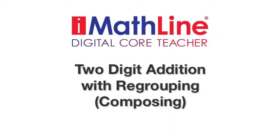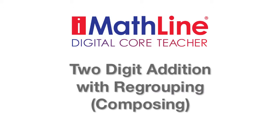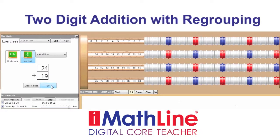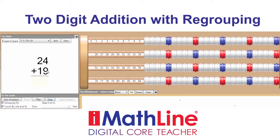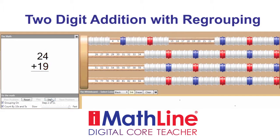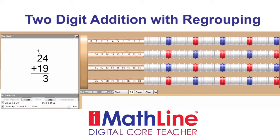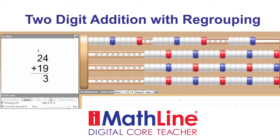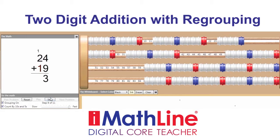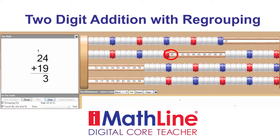Now let's use iMathLine Core Math Teacher to do a double digit addition problem with regrouping. We set up the problem 24 plus 19. First step: add the units column — four plus nine. We see four, we add nine more. Next step, add them together. We see thirteen on our MathLine, indicated by one ten and three ones. We put three ones in the ones column and regroup a ten. Now we clear our MathLine to add the tens column: one ten plus two tens plus one ten. We add them together to get forty, or four tens, and write our four tens in the tens column.